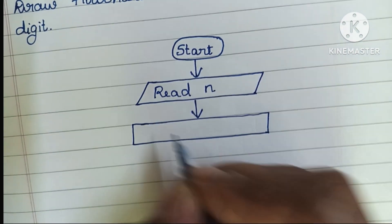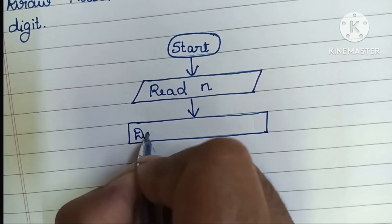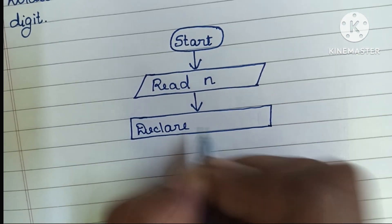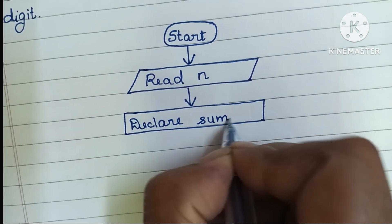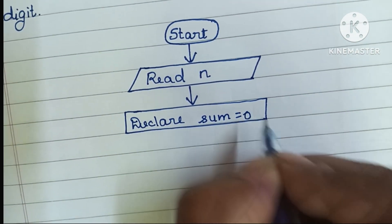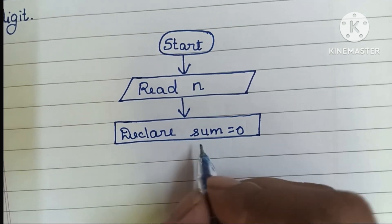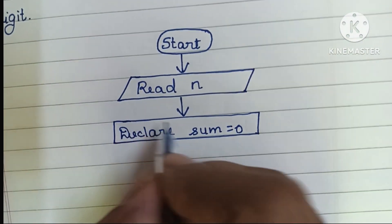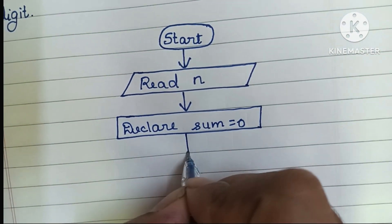Next, we have to declare the sum variable. Declaration is done within a rectangular shape. We declare sum is equal to zero — initially sum is equal to zero.